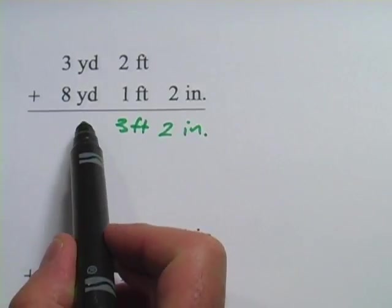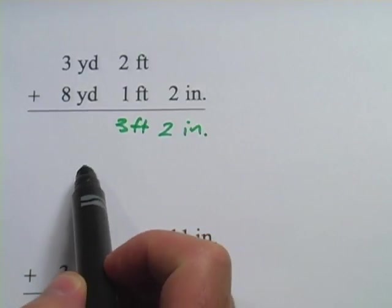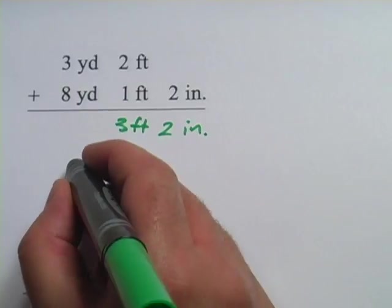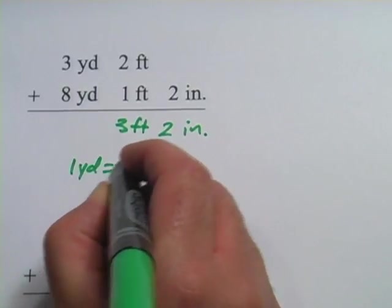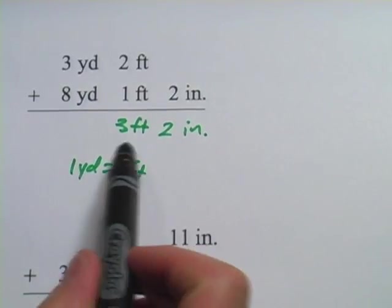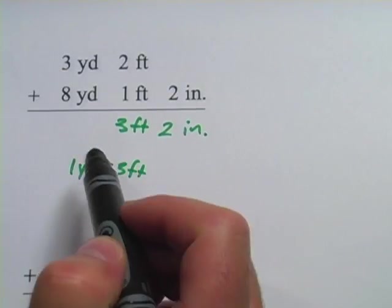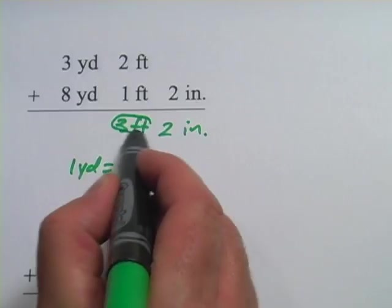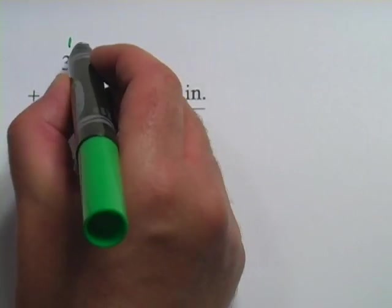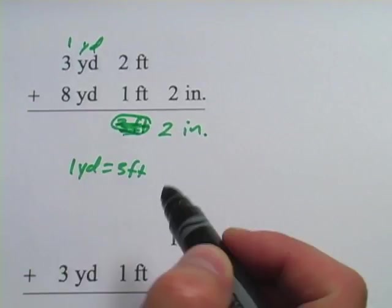but the next unit over is yards, and I need to know a fact here, I need to know that one yard is three feet. So really, whenever I get up to three, I'm going to take this and move it over to the next column, so that three feet becomes one yard, and it disappears here.